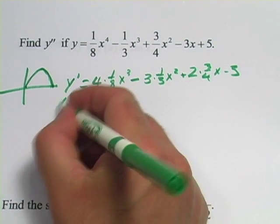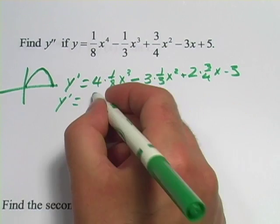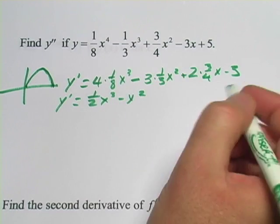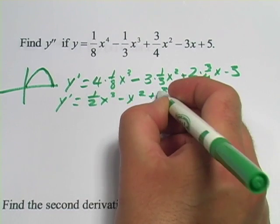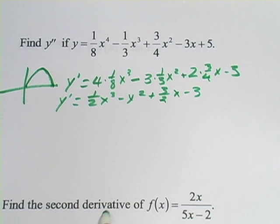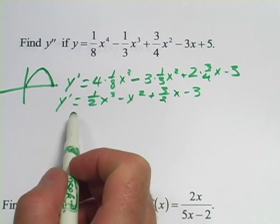And we can simplify this a little bit. So that's 1 half x cubed, minus x squared, plus 3 halves x minus 3. So there's y prime, or the first derivative.